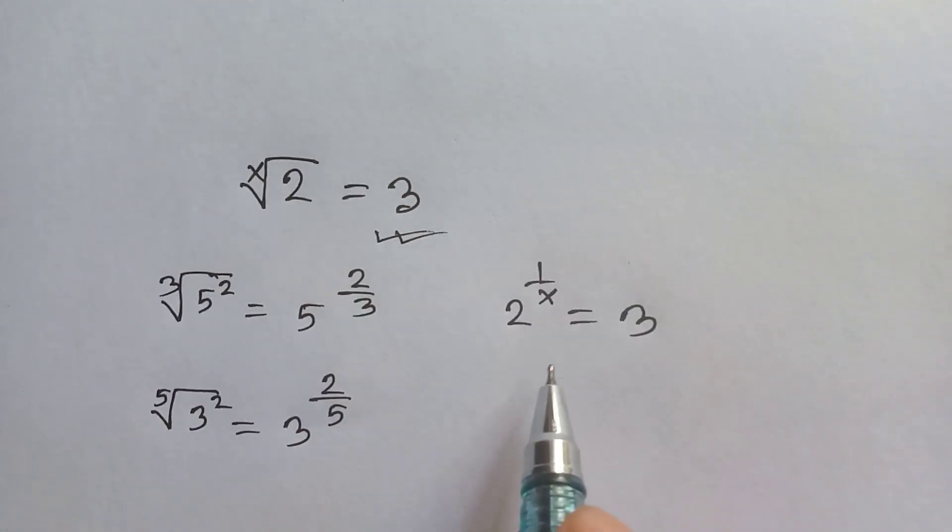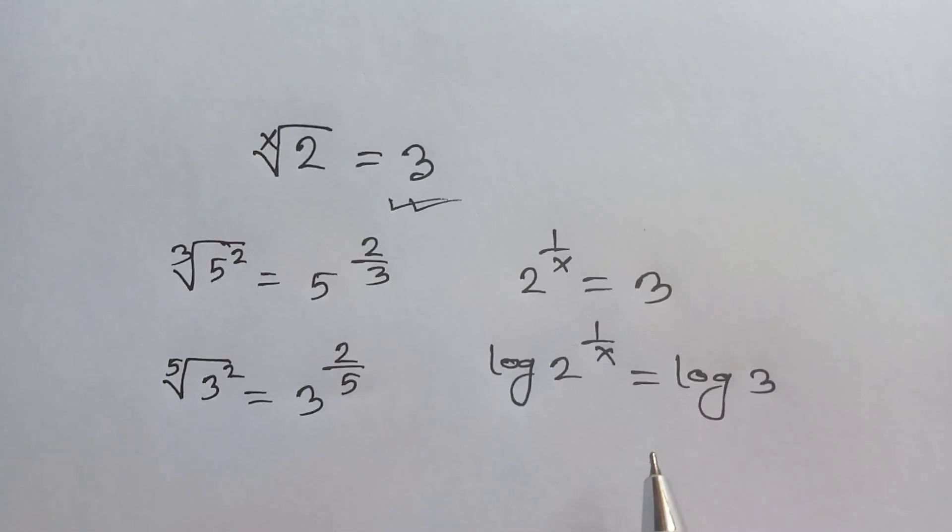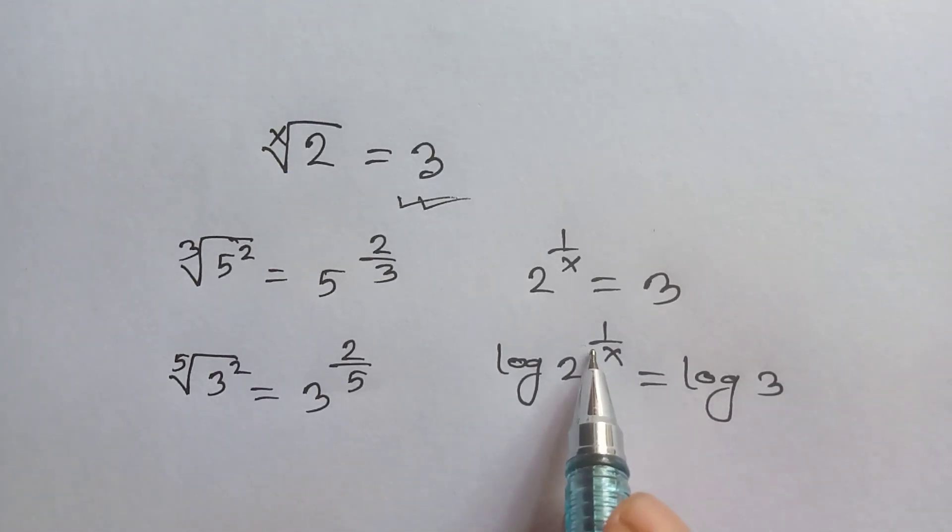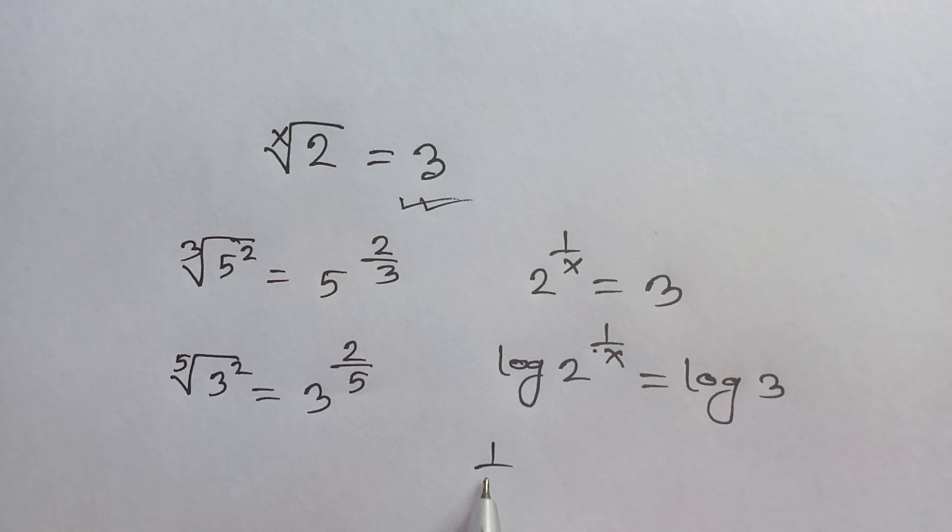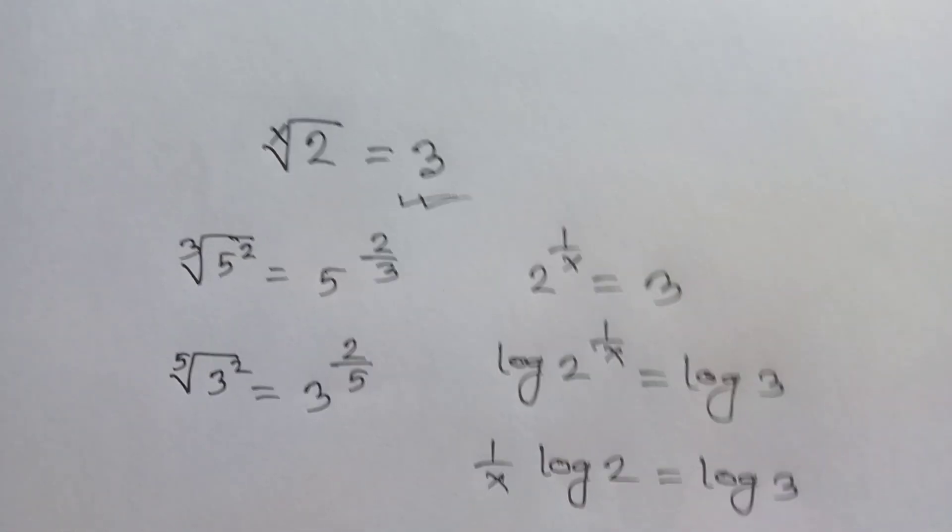Next we will take log of both sides, so it will be log of 2 to the power 1 over x is equal to log of 3. And we will take this 1 over x to the front side, so it will be 1 over x log of 2 is equal to log of 3.